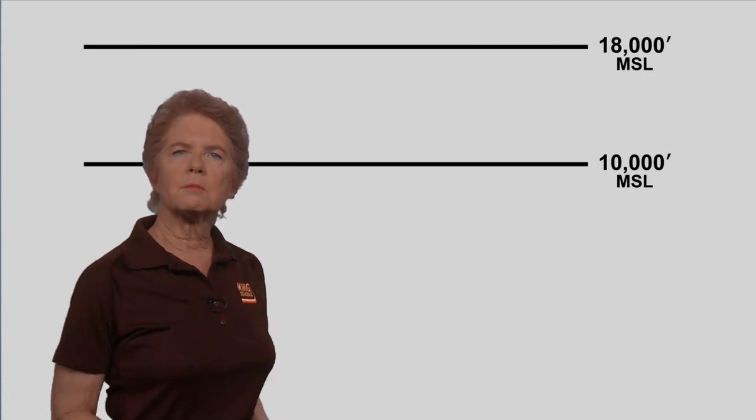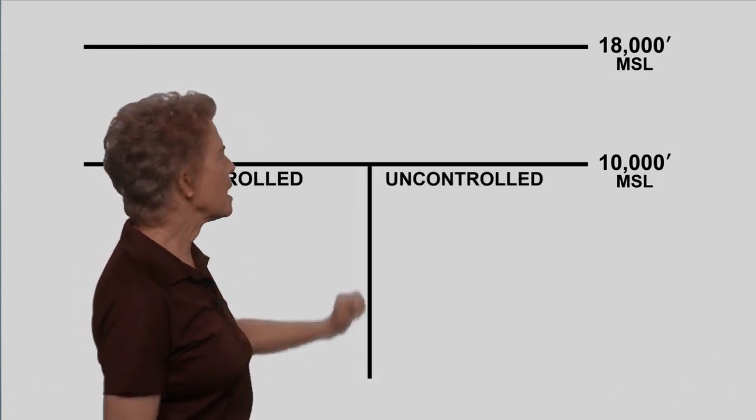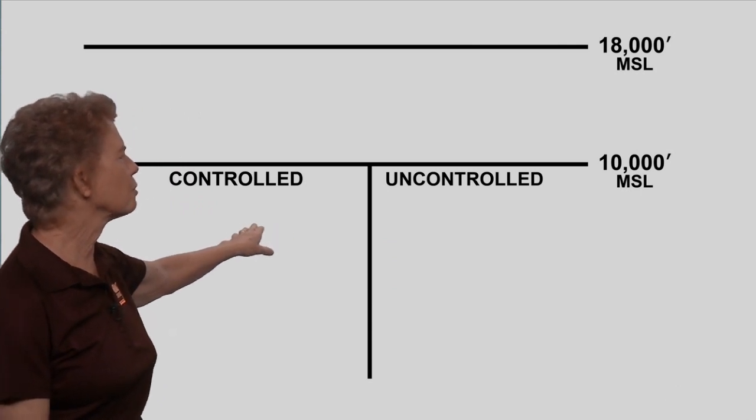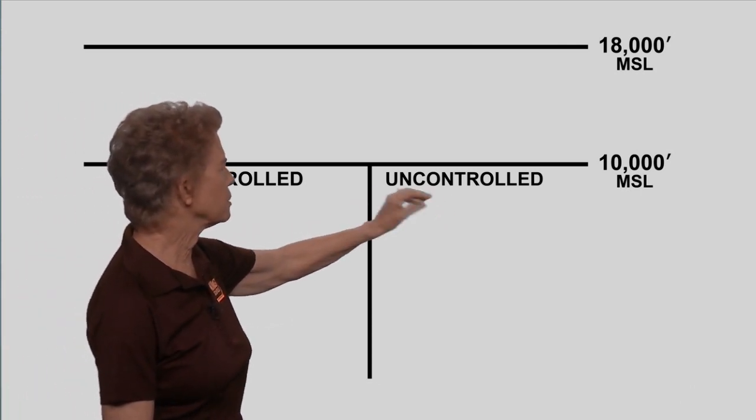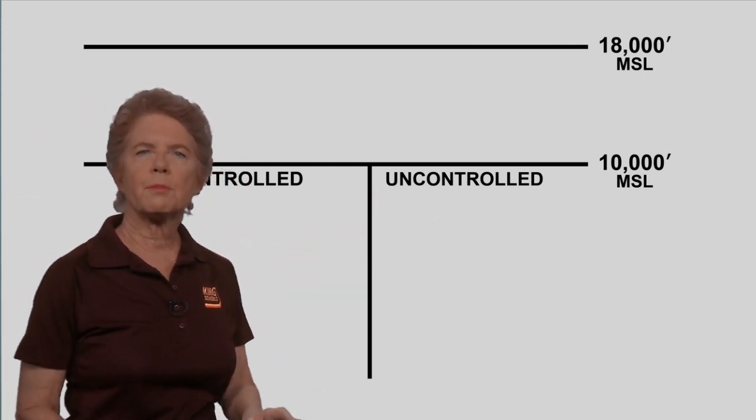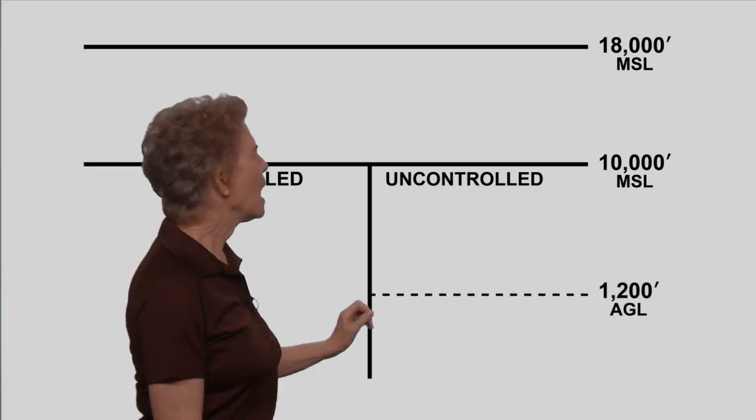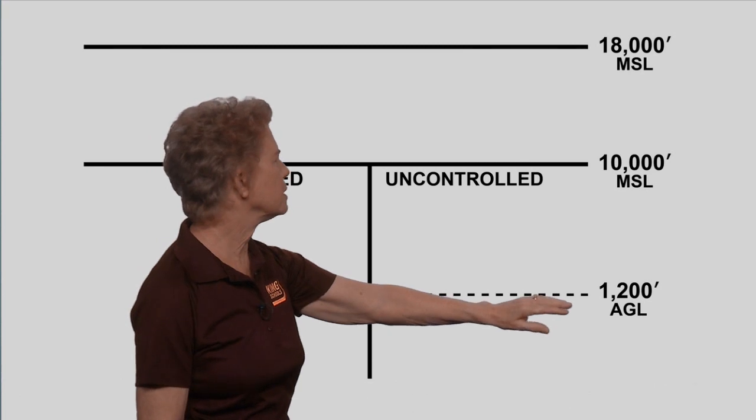Then, from the bottom line, split the chart in half with a vertical line and label the left side controlled and the right side uncontrolled. Towards the bottom of the right side, draw another horizontal line and label it 1,200 feet AGL.